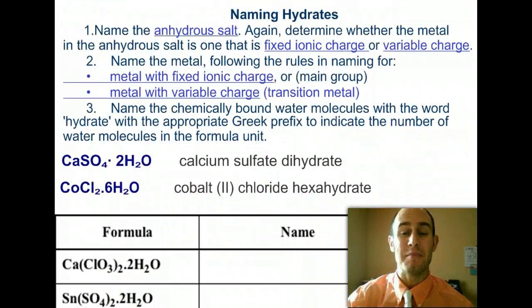On to naming hydrates. Here's the rules and the steps that you need to pause the video, write these rules down. What we call an anhydrous salt. Determine whether the metal is anhydrous salt. You're basically looking at, is it going to be bonded with an ionic charge or a variable charge? Anhydrous means without water.